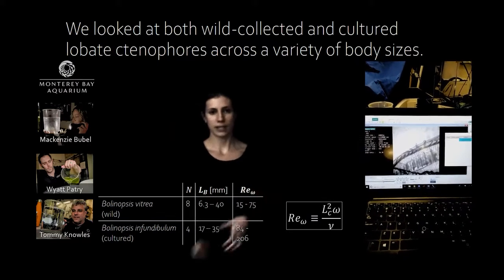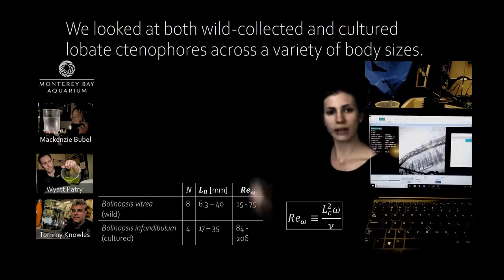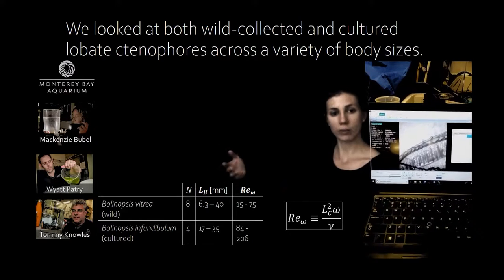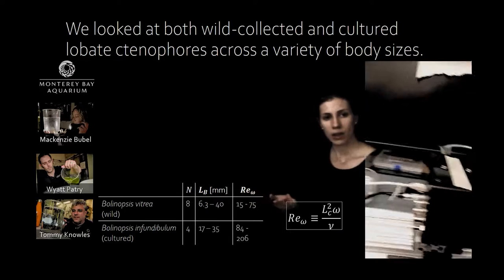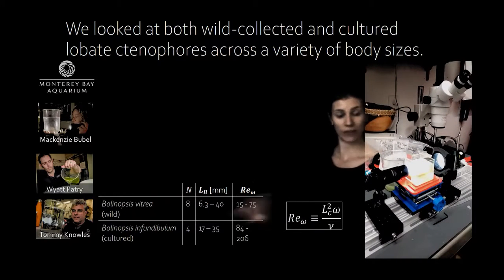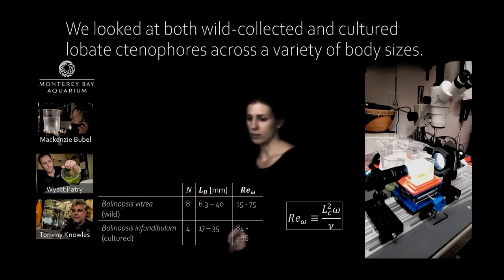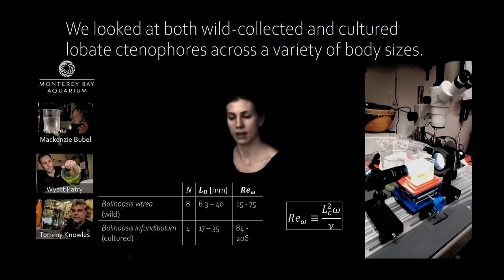You can see in this table the number of animals that we collected from the two different sites, the range of body lengths, and the range of Reynolds numbers of the ctenes. Here to define a Reynolds number we're using the ctene length, the beating frequency, and the fluid kinematic viscosity. There are some differences in the wild and the cultured animals in terms of the range of body lengths and Reynolds numbers, but that's probably okay because the whole goal is to maximize the range of Reynolds numbers that we are analyzing.